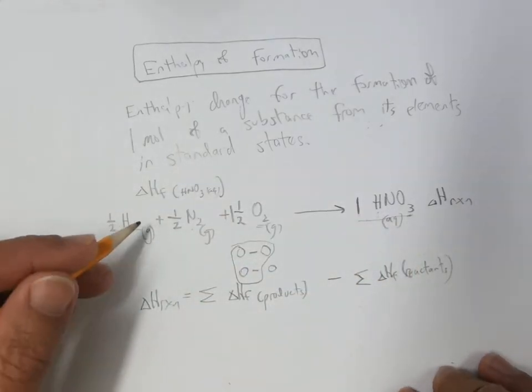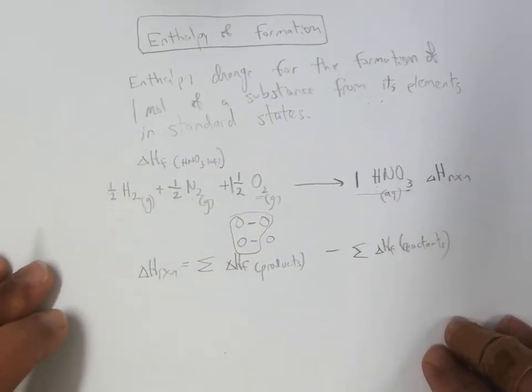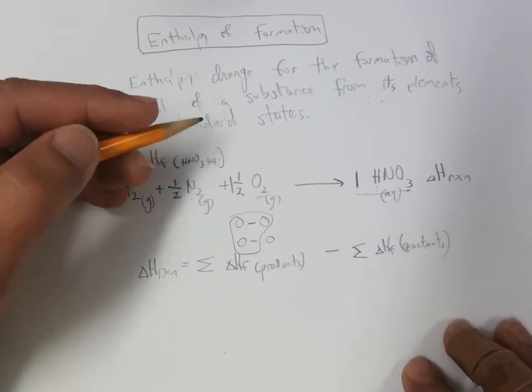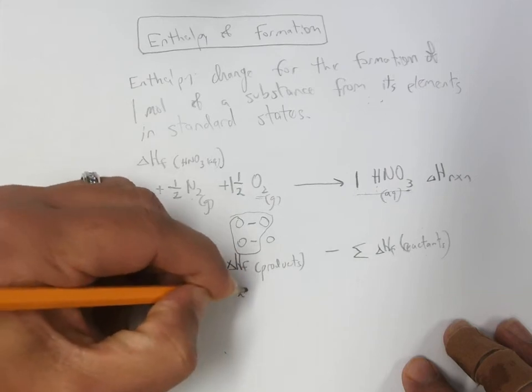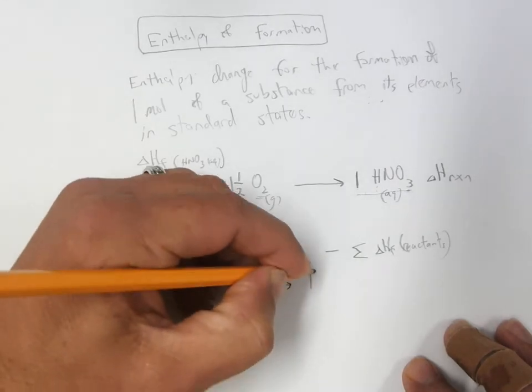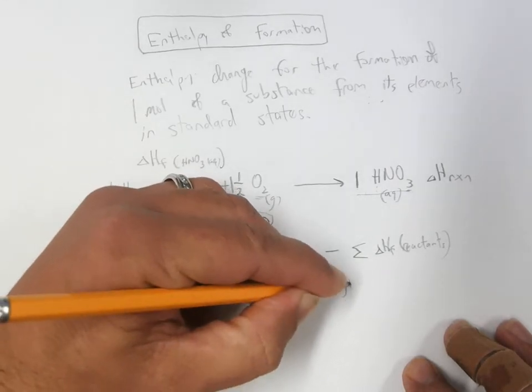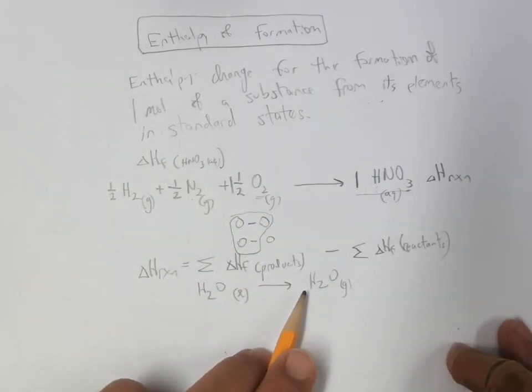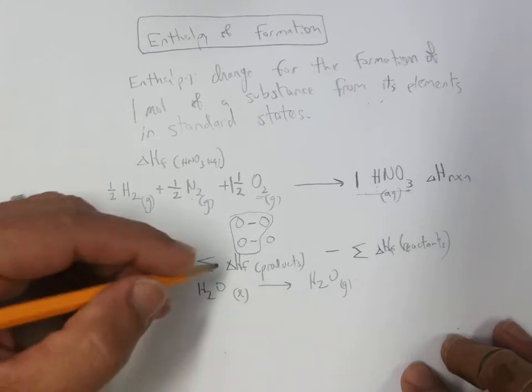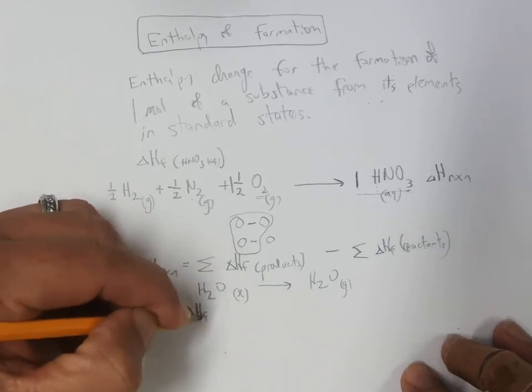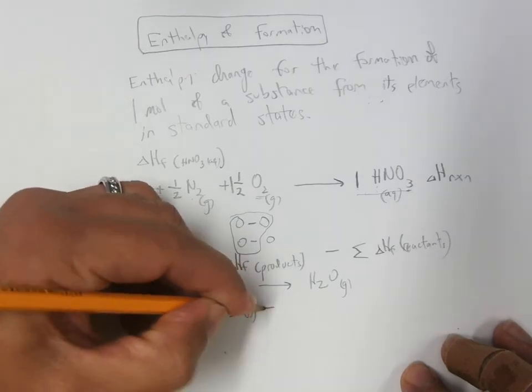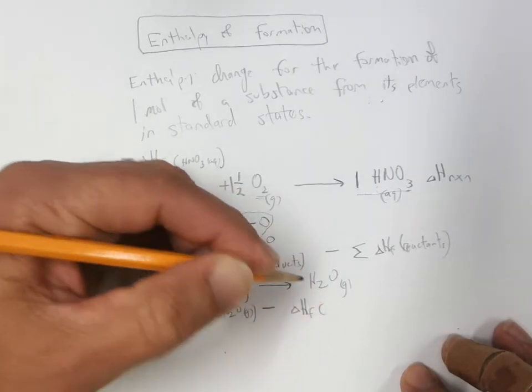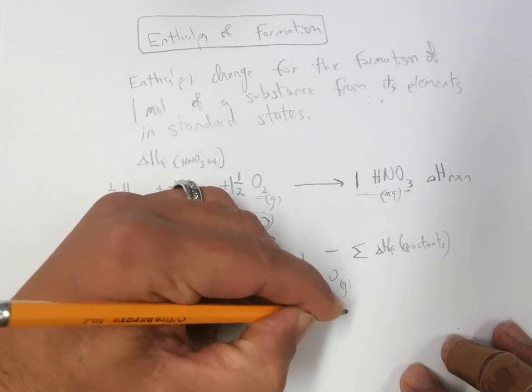And so if you can write a balanced chemical equation for something you're interested in the heat change for, like water liquid boiling to form water gas, there is a process where we have reactants forming products. If you took the heat of formation of the product, H2O gas, and subtracted the heat of formation of the reactant, H2O liquid.